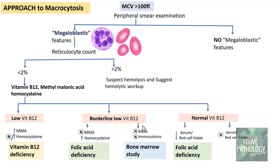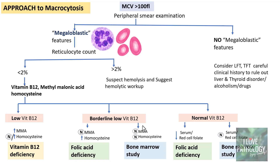If both vitamin B12 and folate levels are normal, ruling out both deficiencies, look for other causes of megaloblastic macrocytosis and proceed to bone marrow study. If the peripheral smear shows no megaloblastic features despite macrocytosis, consider non-megaloblastic causes: perform liver function tests, thyroid function tests, and take a careful clinical history to rule out liver disorders, thyroid disorders, alcoholism, or drug exposure.